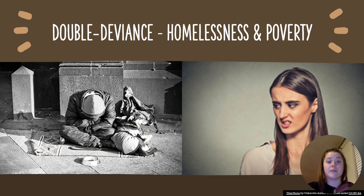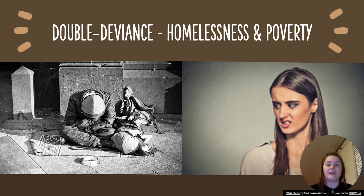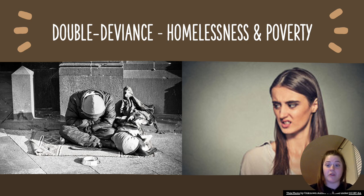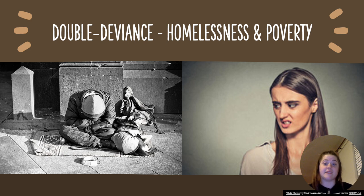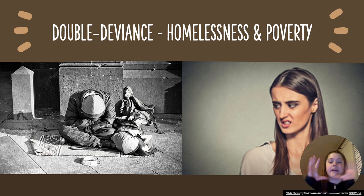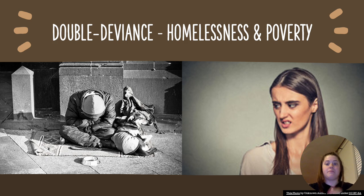To summarize the idea of double deviance: it means that whatever is being discussed — in our case, homelessness and poverty — is viewed as an act of deviance in and of itself by society, and it can also be a cause for someone to commit an act of deviance.